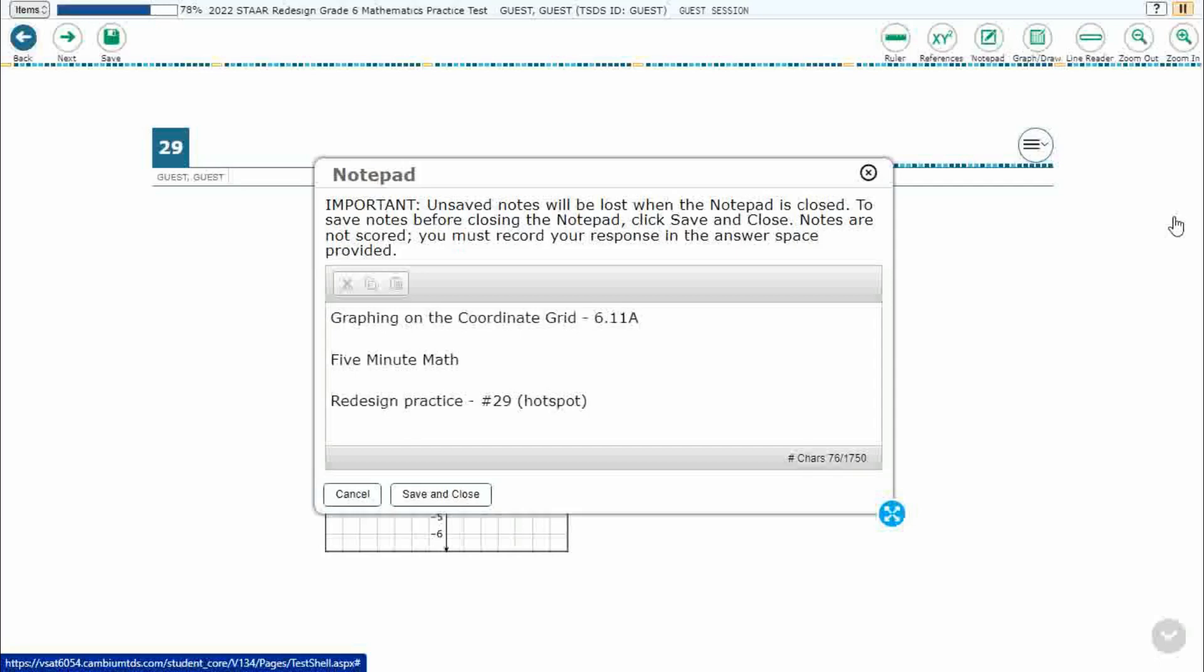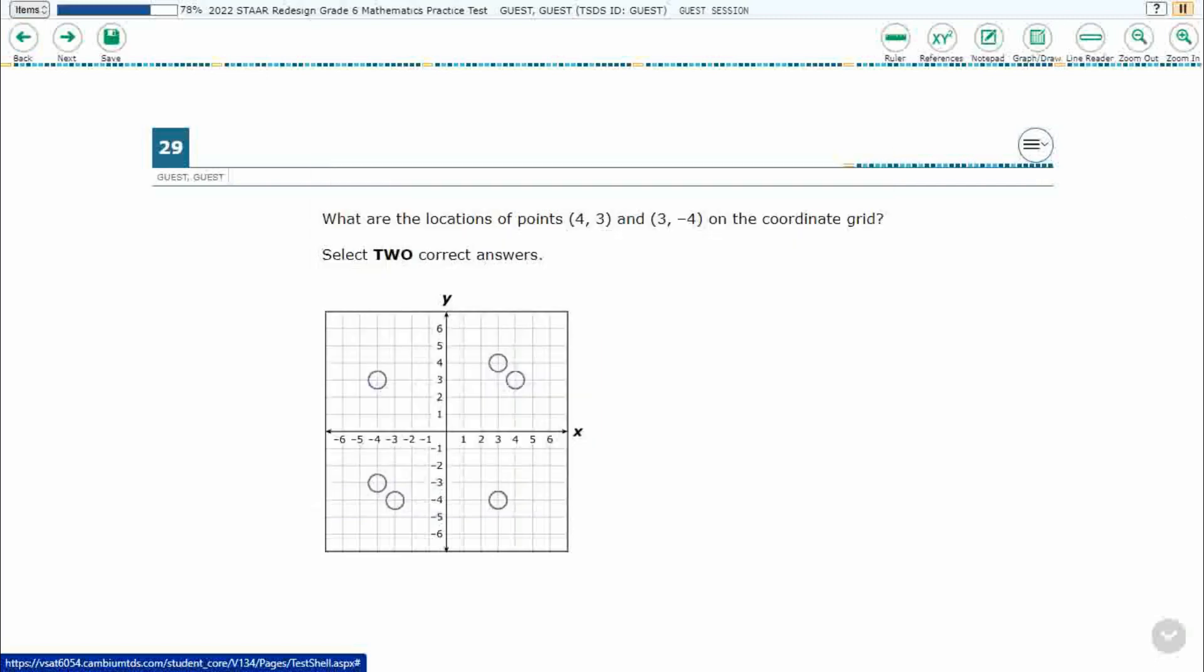Hello and welcome to 5-Minute Math. Today we are looking at the sixth grade concept of graphing on the coordinate grid. This is standard 6.11a in the great state of Texas and we are using item number 29, which is a new item type called Hotspot, off the Online Practice Redesign Star Test.